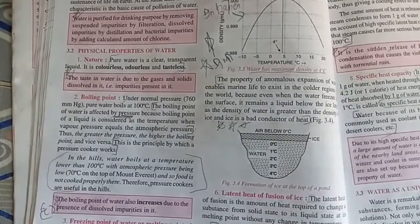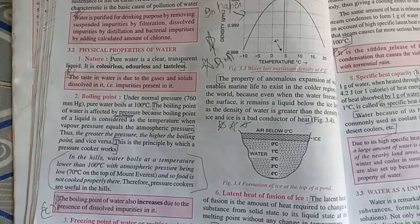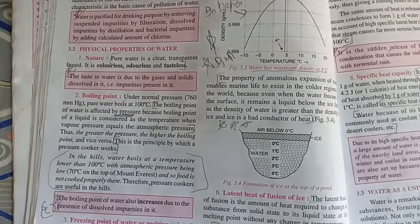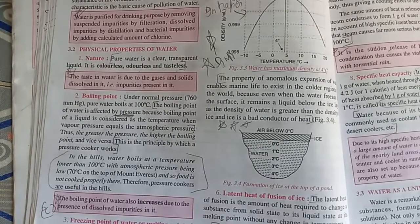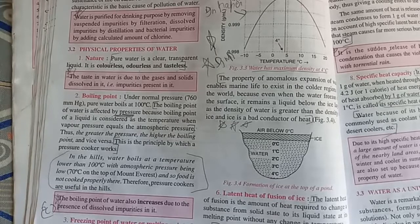By this principle only, the pressure cooker works. You know at hill stations, atmospheric pressure is low, so water boils at temperatures lower than 100 degrees Celsius.